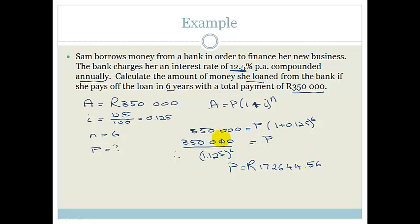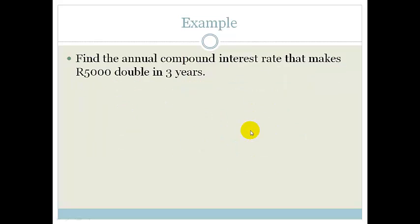Do you see that she actually paid almost double what she borrowed from her actual loan? Her loan was R172,000 and she paid R350,000. In fact, she paid more than double. Let's look at another example.